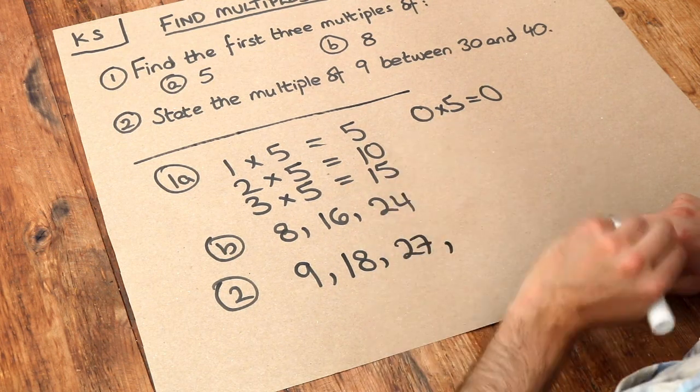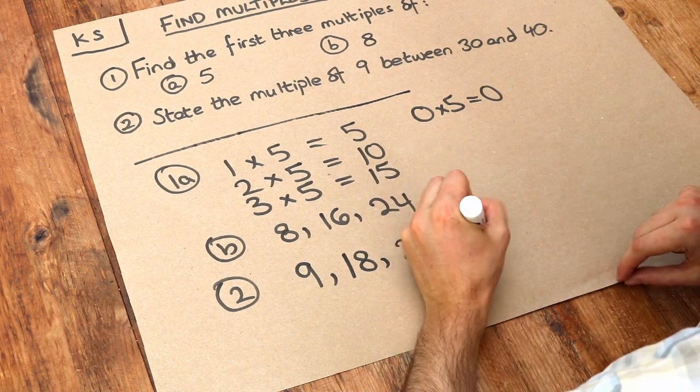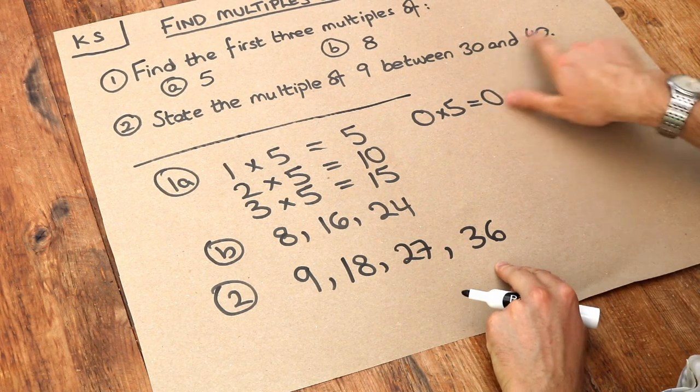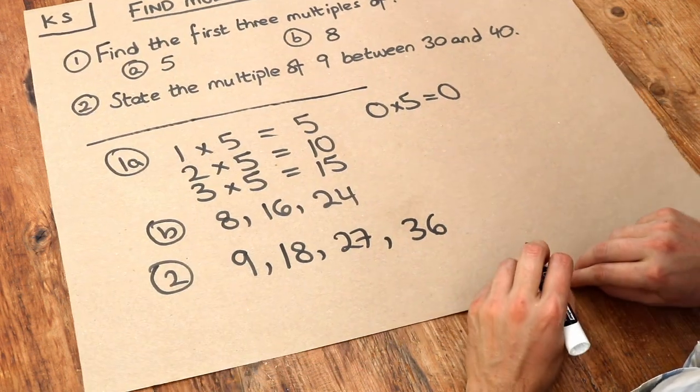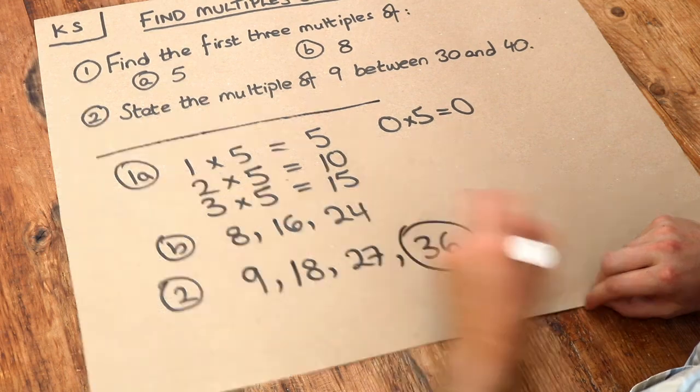Four lots of nine, four times nine is thirty-six. Is that between thirty and forty? Yes, it is. Therefore, the answer is thirty-six.